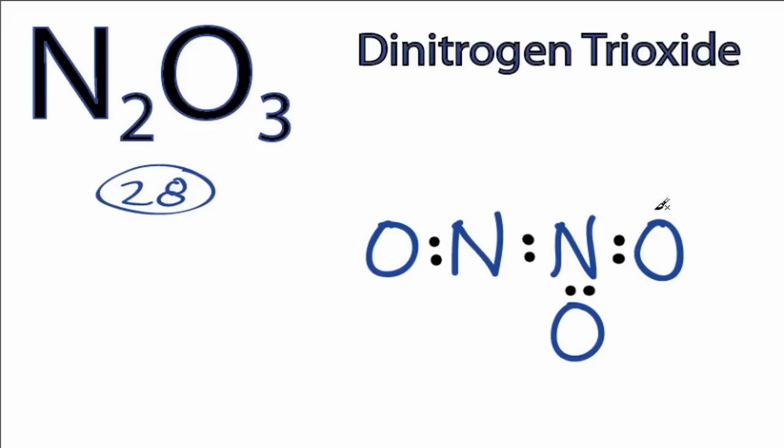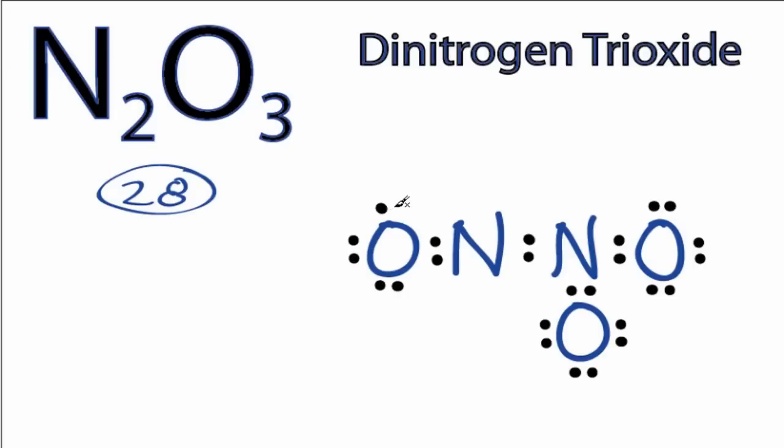And then we'll go around the oxygens on the outside. So we have 8, 10, and 26, and we'll put the last pair right here on the nitrogen, 28.